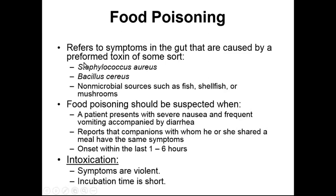Some of those include Staphylococcus aureus, Bacillus cereus, or some non-microbial sources like bad fish, bad shellfish, or mushrooms. Food poisoning should be suspected when a patient presents with severe nausea and violent vomiting accompanied by diarrhea, and reports that companions they've shared a meal with recently have the same symptoms.